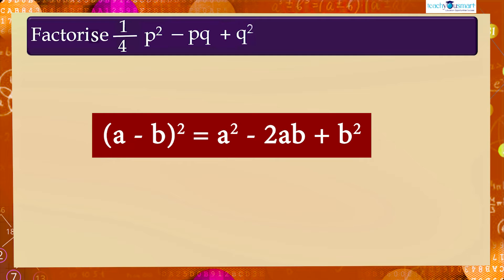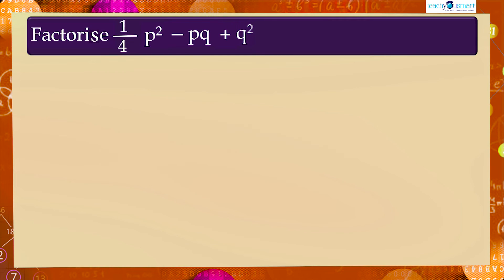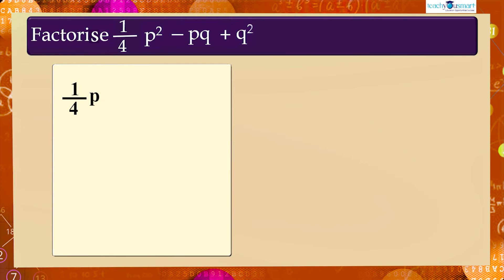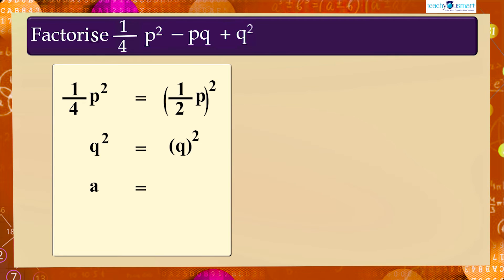First, we have to find the value of a and b from the given expression. (1/4)p squared can be written as (1/2 p) whole square, and q squared as q squared. That is, a equals (1/2)p and b equals q.